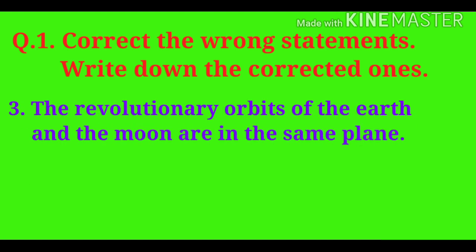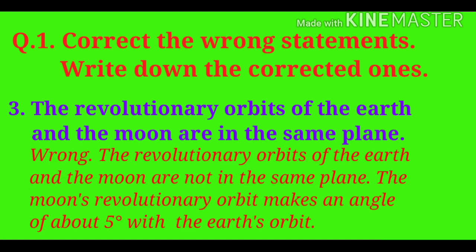Third statement: The revolutionary orbits of the earth and the moon are in the same plane. Wrong. Correction: The revolutionary orbits of the earth and the moon are not in the same plane. The moon's revolutionary orbit makes an angle of about 5 degrees with that of the earth.